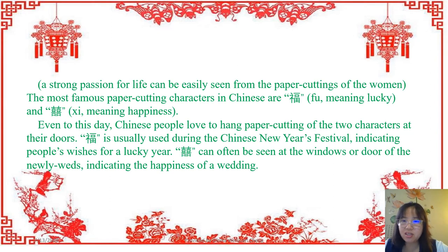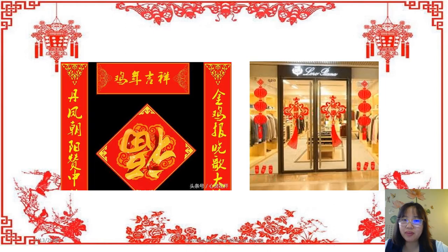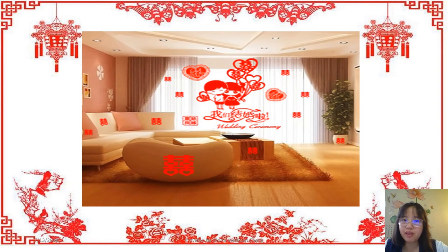Here are two important characters. The first is 福，which means good luck or fortune — we use that for Chinese New Year. The second is 双喜 — double happiness — which we use for weddings. We paste 福 upside down because 倒 has the same pronunciation as 到，which means 'to arrive,' so we hope fortune will arrive at your home.